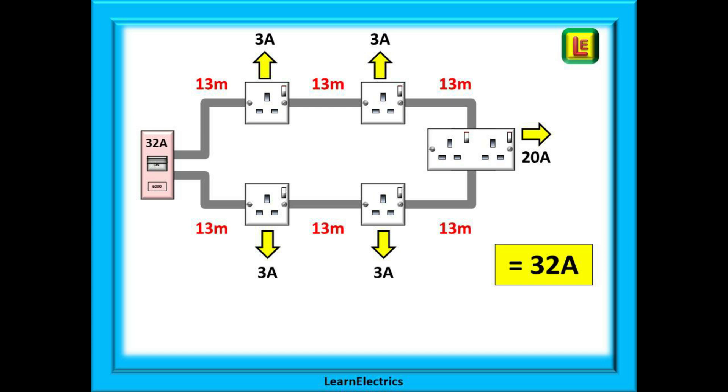Let us suppose that the circuit is fully loaded. We know that the furthest point, the double socket, will have a current demand of 20 amps in normal use, and that the remaining 12 amps will be evenly distributed around the ring circuit. That is to say each of the four single sockets will draw 3 amps per socket.